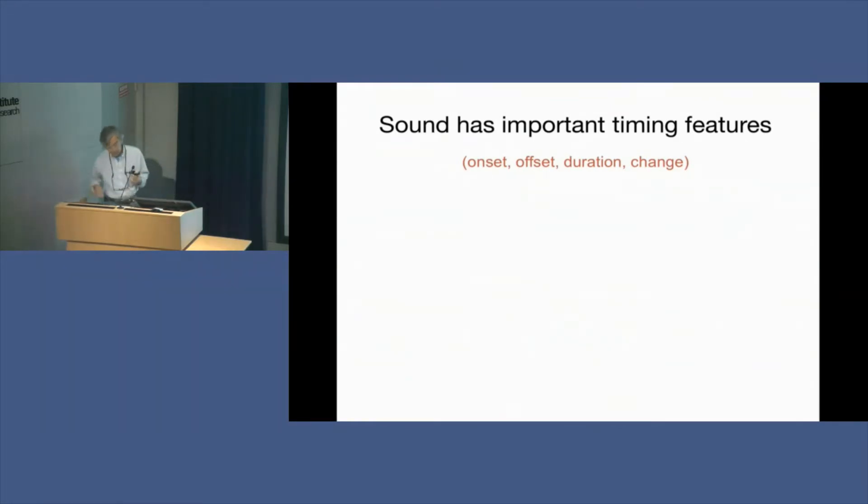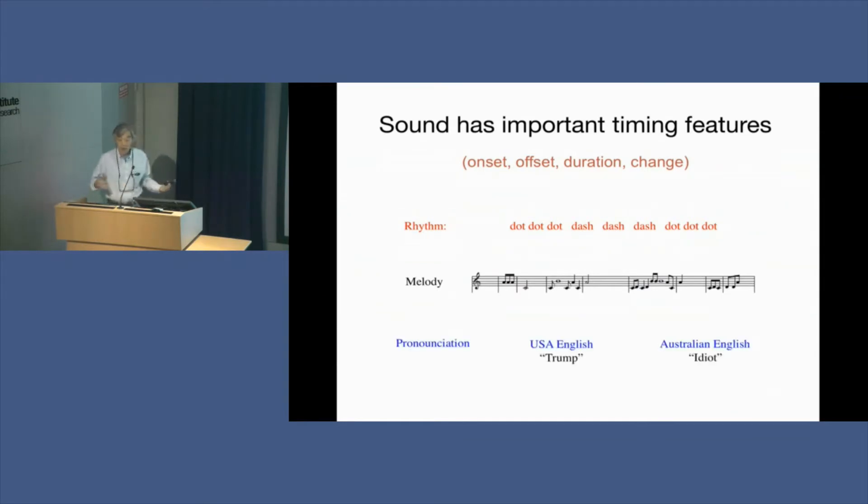The third component of hearing is timing. We know timing because sound has an onset, offset, duration, and patterns. There's rhythm to sound that we use. It's very important in melodies and prosody, which is the cadence of speech, and in pronunciation.